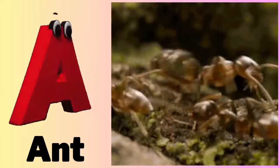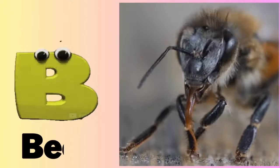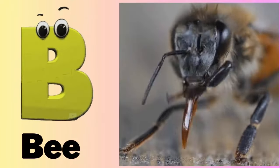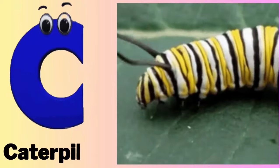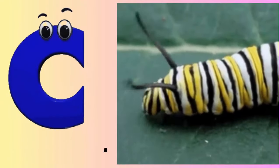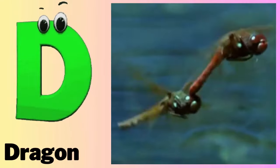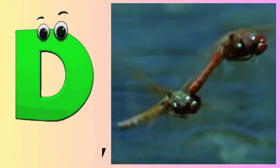A - A for ant. B - B for bee. C - C for caterpillar. D - D for dragonfly.